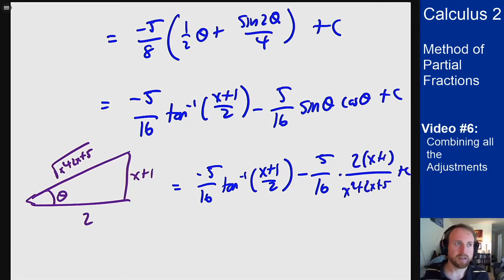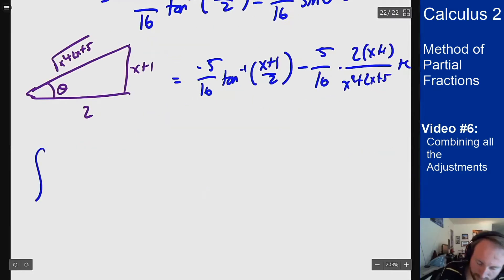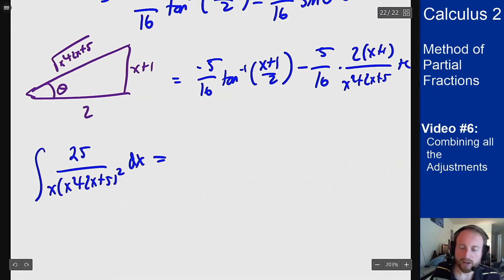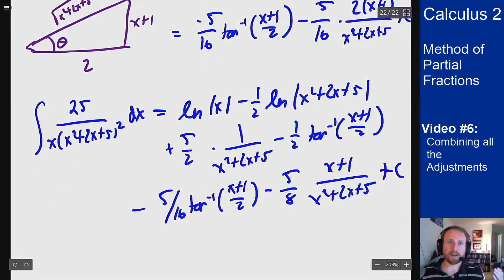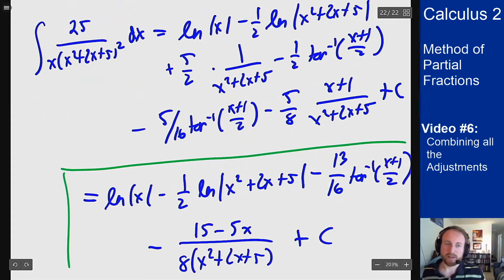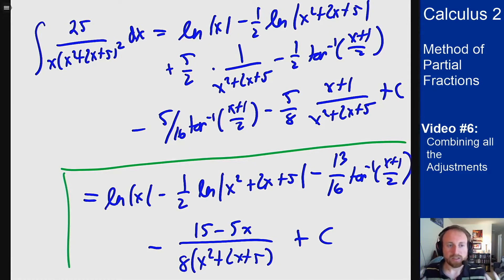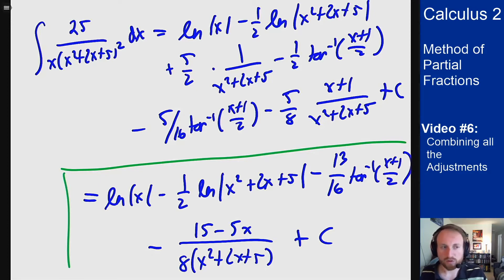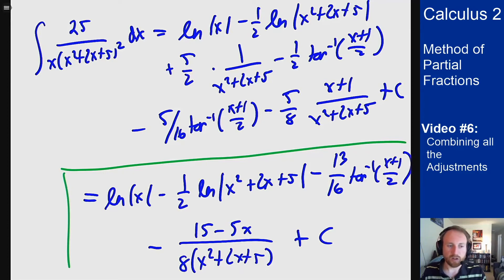That's all five terms. Writing them all out gives the full antiderivative, which we can recombine slightly for a cleaner form. Yes, this problem is long and complicated with many moving parts, but the underlying ideas are always the same: once you write the partial fraction decomposition, solve for the coefficients — hard here because of the repeated irreducible quadratic — then integrate each piece.